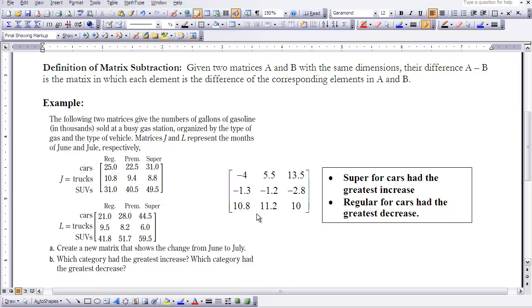So if you go to part B, it says which category had the greatest increase. So if we look through our matrix for the largest increase, we see 13.5. So that would represent, this is in the top right-hand column in this matrix, so that would represent cars using super went from 31 to 44.5. So that had a difference of 13.5 thousand gallons between those two months.